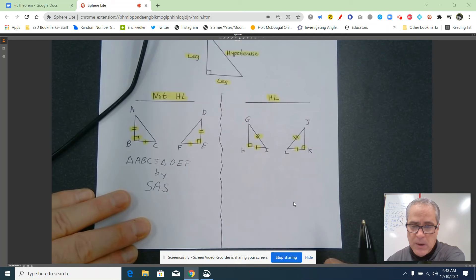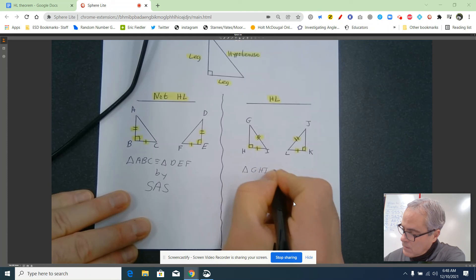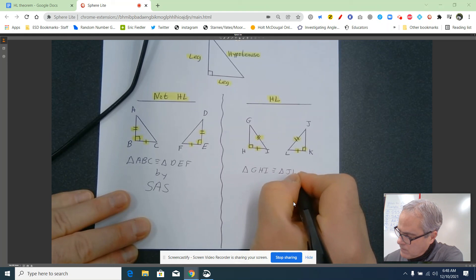So triangle GHI is congruent to triangle JKL by HL.